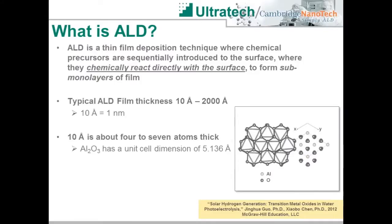So just what is ALD? Atomic layer deposition is a thin-film deposition technique wherein the article to be coated is alternately exposed to two different chemical precursors. In turn, these precursors chemically react with the surface, forming sub-monolayers of film growth. ALD films are typically measured in angstroms or nanometers, ranging in thickness from 10 to 2,000 angstroms. Below, we see a representation of the crystal structure of aluminum oxide, which has a unit cell dimension slightly larger than five angstroms. Typical ALD processes deposit a half to one angstrom per cycle, clearly indicating a sub-monolayer growth process. Sub-monolayer growth per cycle enables fine thickness control even for very thin films.